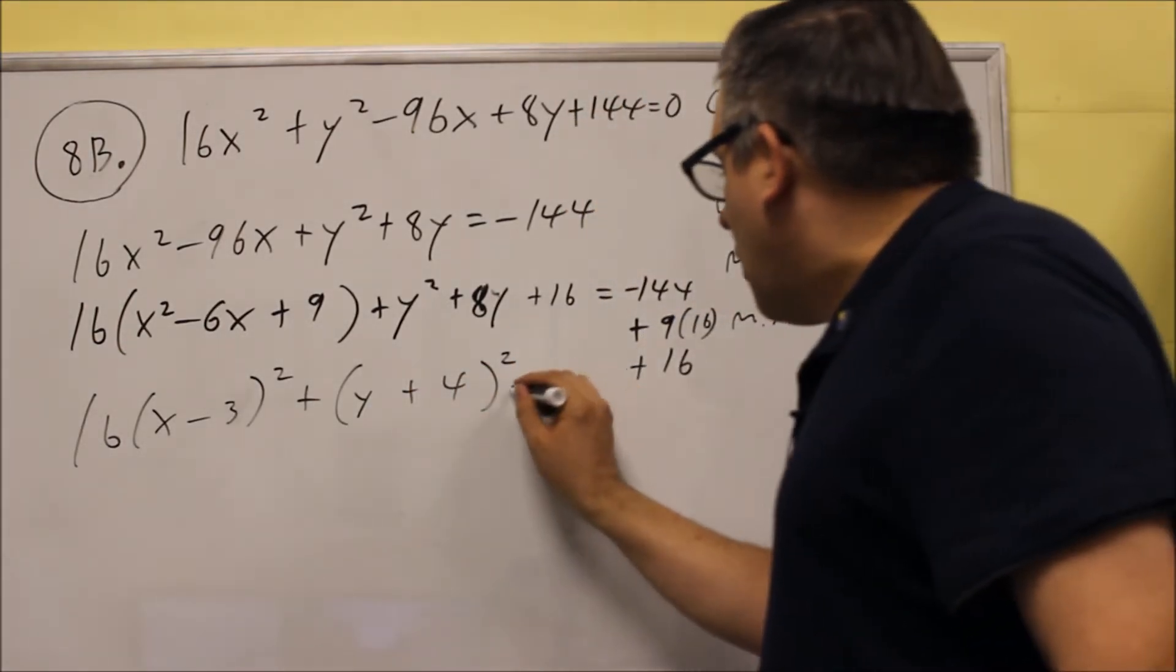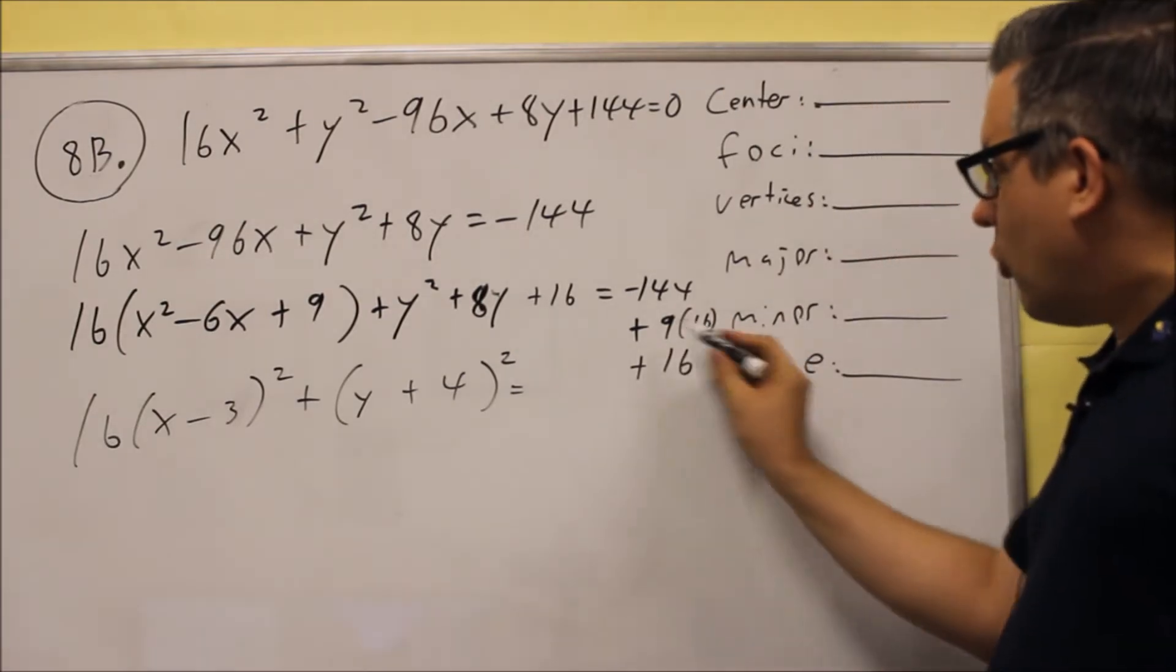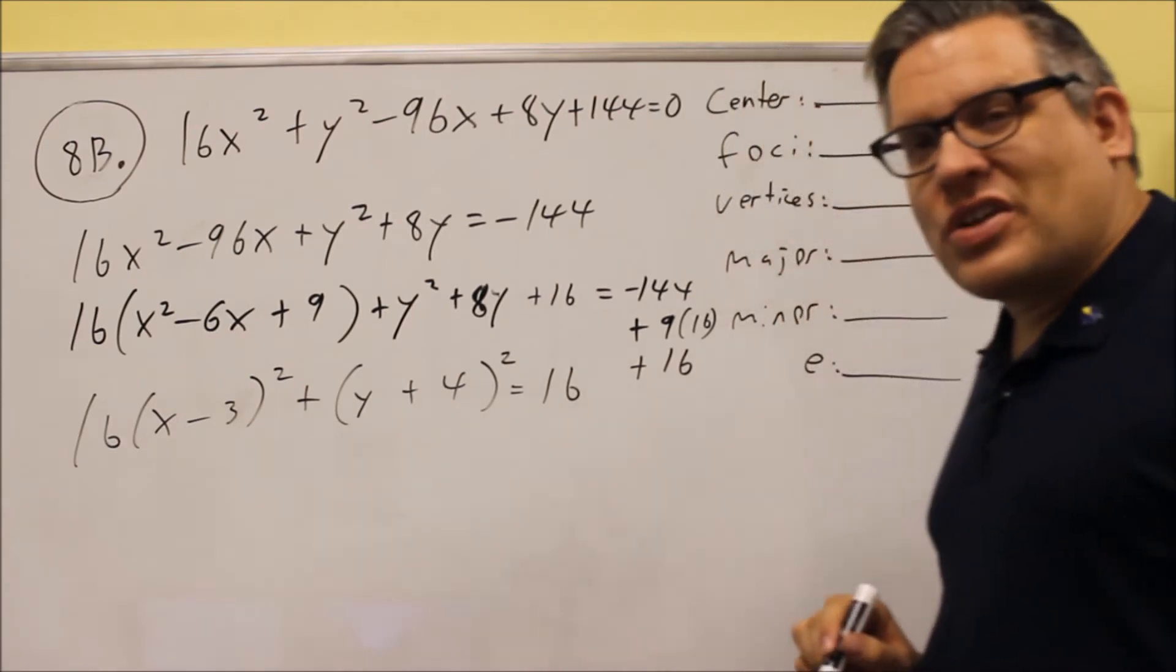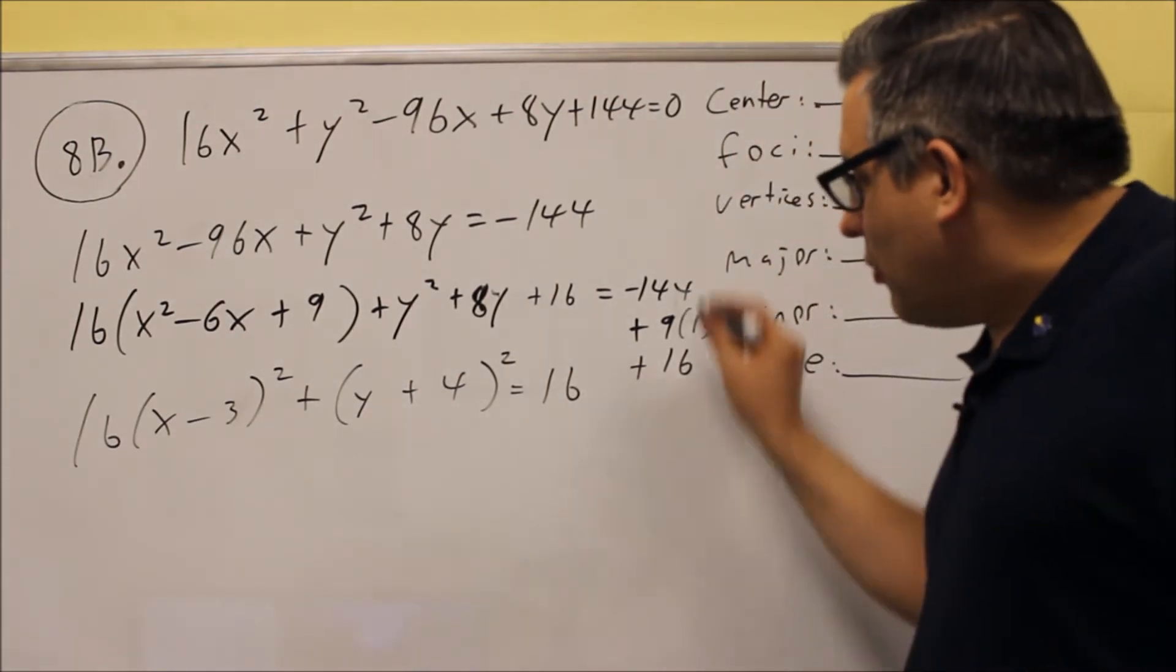So if you take all of this, negative 144, add the 9 times 16, add the 16, you're going to be left with 16 on this side when you add all that together.